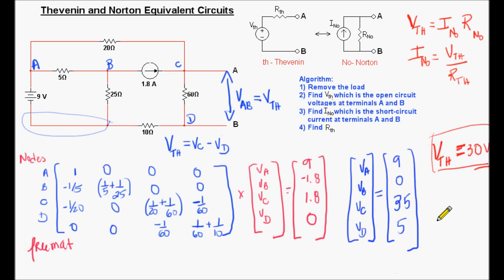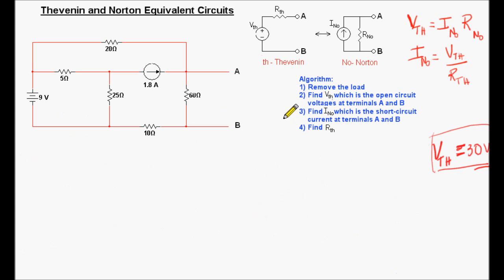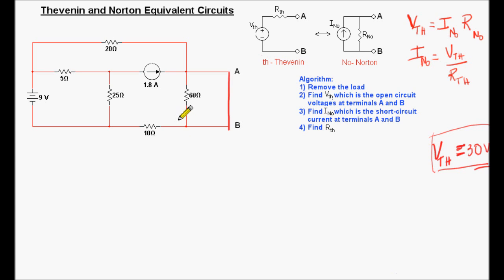The next step is to find I_Norton — the short-circuit current at terminals A and B. To do this, we place a short circuit between terminals A and B. This short also shorts the resistor connected there. We then have a new circuit configuration to analyze.